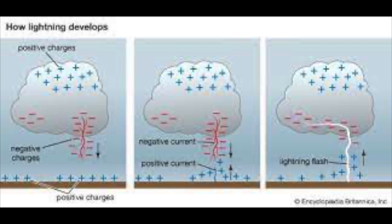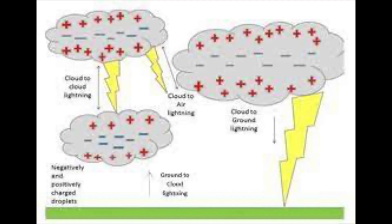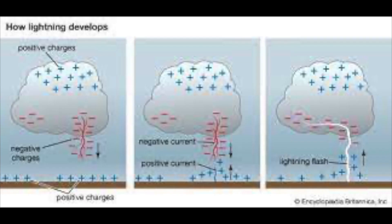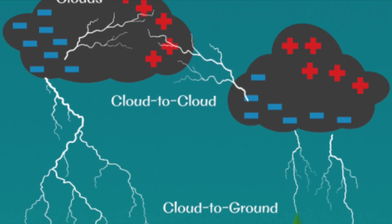Now, what causes lightning? Lightning is caused due to the accumulation of electric charge in the clouds. As the charge density increases, air can no longer stop the flow of charges, and hence a lightning bolt strikes the earth. In simple physics, lightning is a giant spark of electricity in the atmosphere or between the atmosphere and the ground.